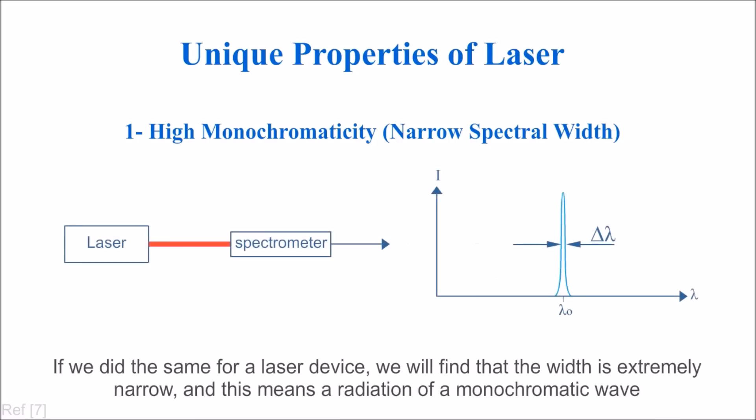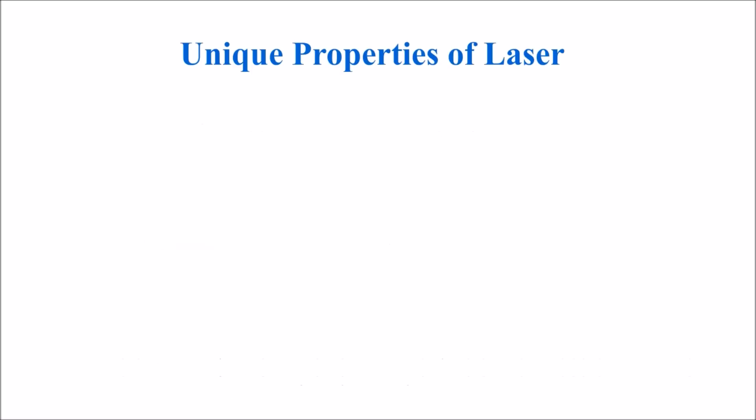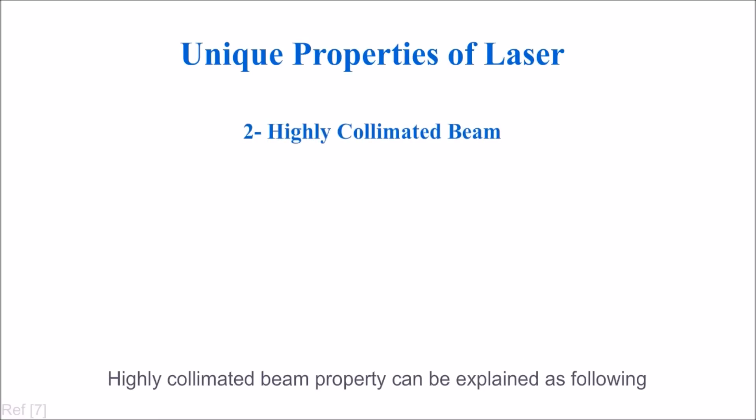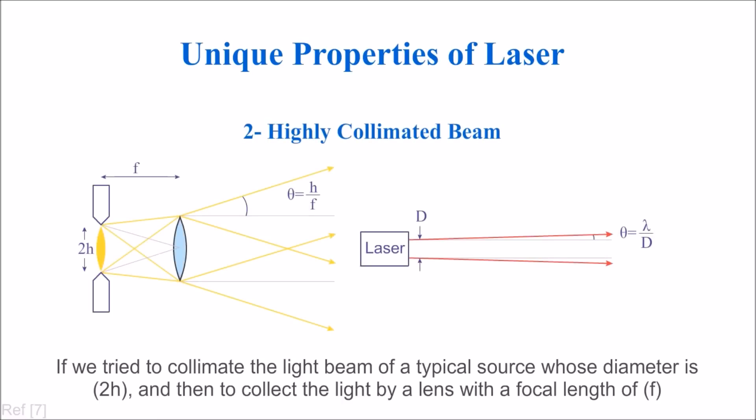Highly collimated beam property can be explained as follows. If we try to collimate the light beam of a typical source with diameter 2h and then collect the light by a lens with focal length f, the angle of divergence theta would be given by h over f.